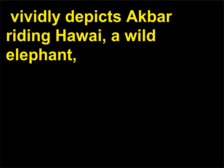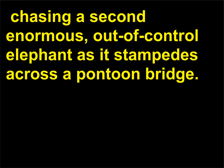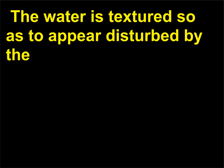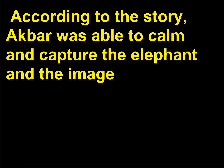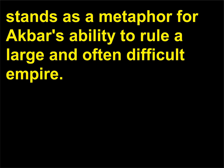Folio 22 of the Akbarnama, now part of the collection at the Victoria and Albert Museum, vividly depicts Akbar riding Hawai, a wild elephant, chasing a second enormous out-of-control elephant as it stampedes across a pontoon bridge. The image is filled with bold colors and details that add drama to the story. The water is textured so as to appear disturbed by the thrashing of the boatman knocked into it by the charging elephant. According to the story, Akbar was able to come and capture the elephant, and the image stands as a metaphor for Akbar's ability to rule a large and often difficult empire.